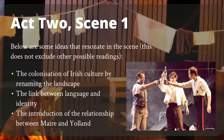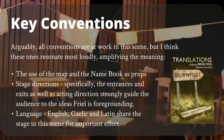That's what I hope to demonstrate here in relation to Act 2, Scene 1. I've given you three ideas that might stimulate some thinking about the scene — these are what I think resonate, though there are other possible readings. Act 2, Scene 1 reveals the colonization of Irish culture by renaming the landscape; there's a link between language and identity; and the scene introduces the relationship between Mara and Yoland. All conventions are at work, but these particular ones resonate more loudly in relation to the meanings identified.